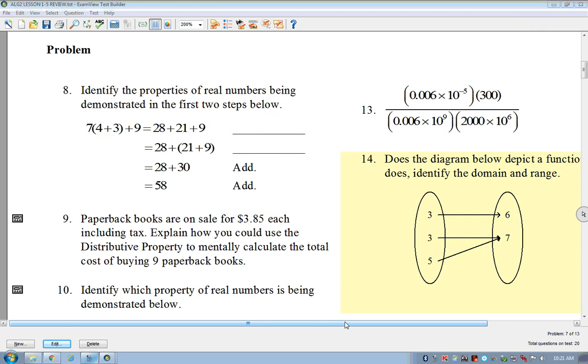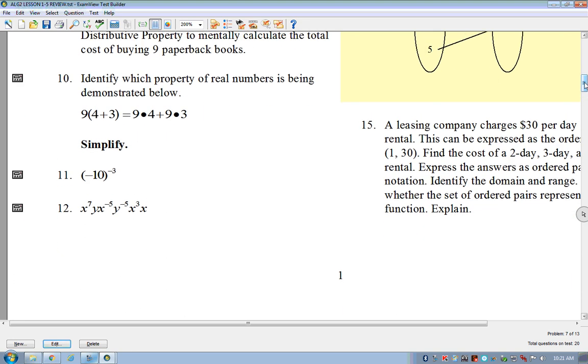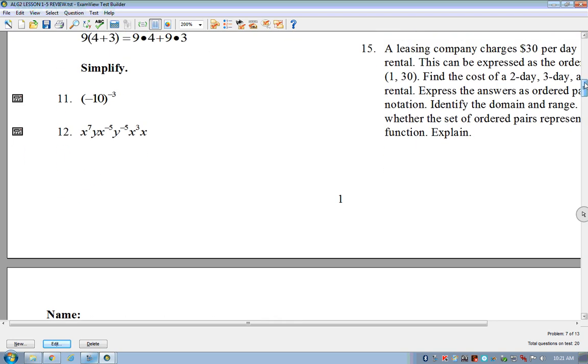Let's see. 12. Who is 12? 12? Is that you? Okay. All right. 12. So it says simplify. We've got x to the 7th, y, x to the negative 5th, y to the negative 5th, x cubed, and x. All right. All of this is multiplication, right? Okay?